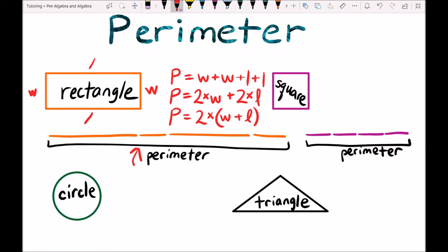Now let's do the square. The square has four sides of equal length. So let's call one side S for side. So the perimeter is equal to S plus S plus S plus S. So we have four S's. That's the length of four sides.